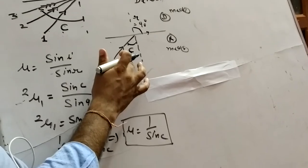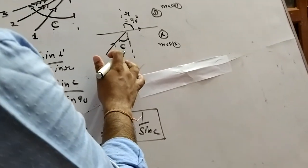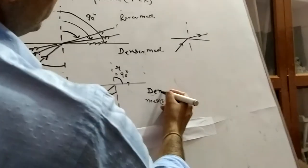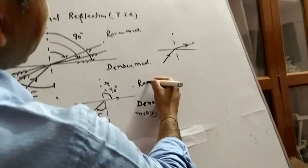So, C is the critical angle when a ray moves from denser to rarer medium.